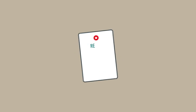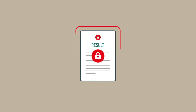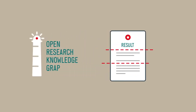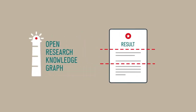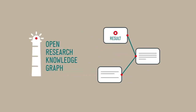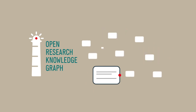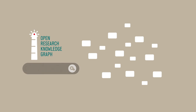We are rethinking how scholarly knowledge is communicated. Instead of burying knowledge in static documents, we are developing the Open Research Knowledge Graph. Ideas, approaches and methods, materials and results are structured descriptions and elements of the graph.